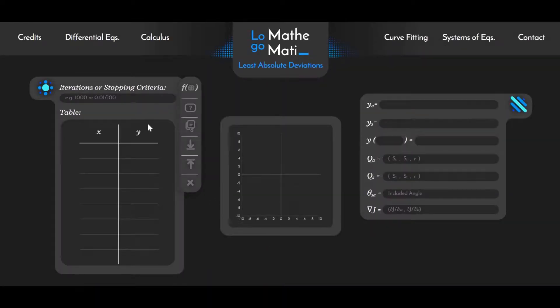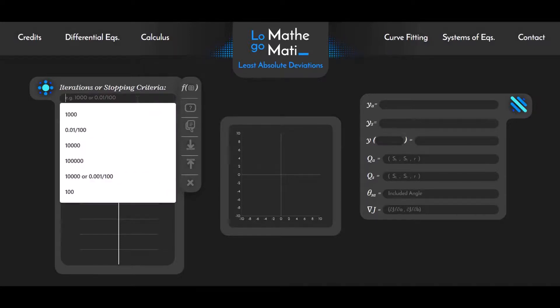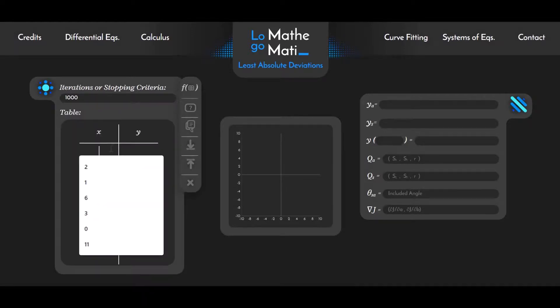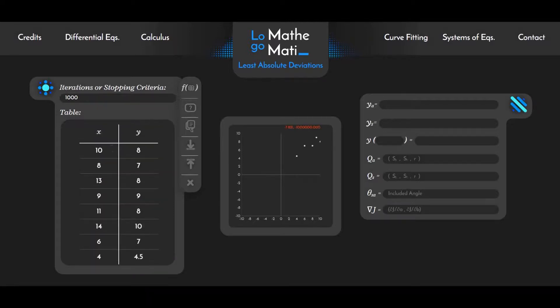Here we're first asked for the number of iterations or a stopping criteria. The stopping criteria is just the percentage of change between the older and the newer that would bring the iterations to a halt. We're going to just focus on iterations. So let me write down maybe 1000. That should be enough. And then for the data set, let's use 10. So let us click on calculate.